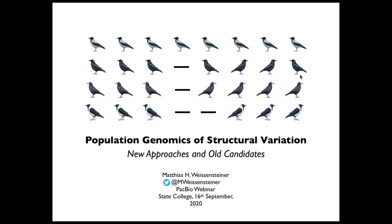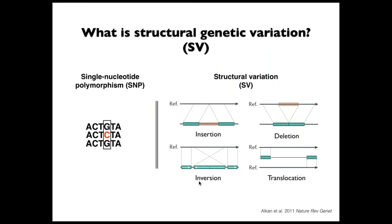Before I dive right in, I want to start with some definitions. What is structural variation? I'll start with defining what a SNP is — a single nucleotide polymorphism — which is basically just a single nucleotide change in a focal sequence compared to a reference. Here on the left side you can see the red C, that's basically a single nucleotide change. And although there are multiple different definitions for structural variation, in my opinion, everything which is not a SNP could be considered a structural variant.